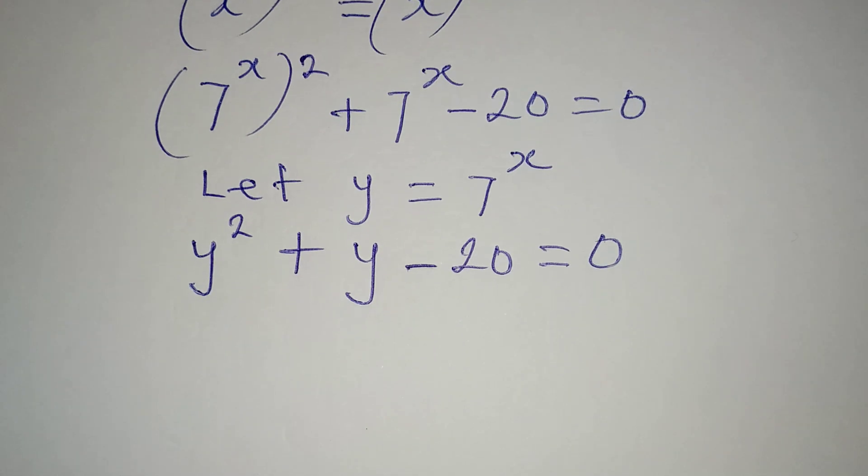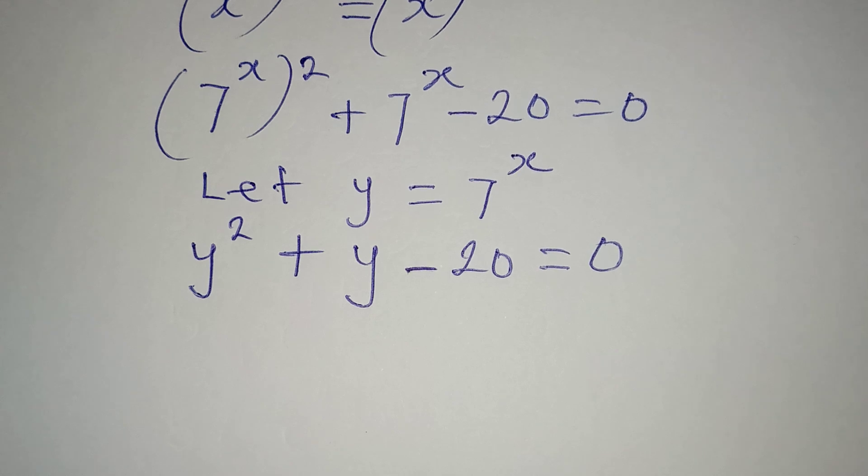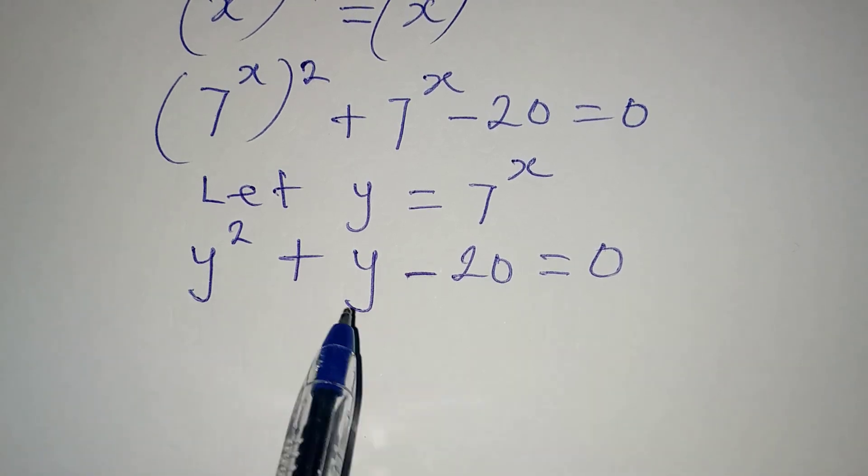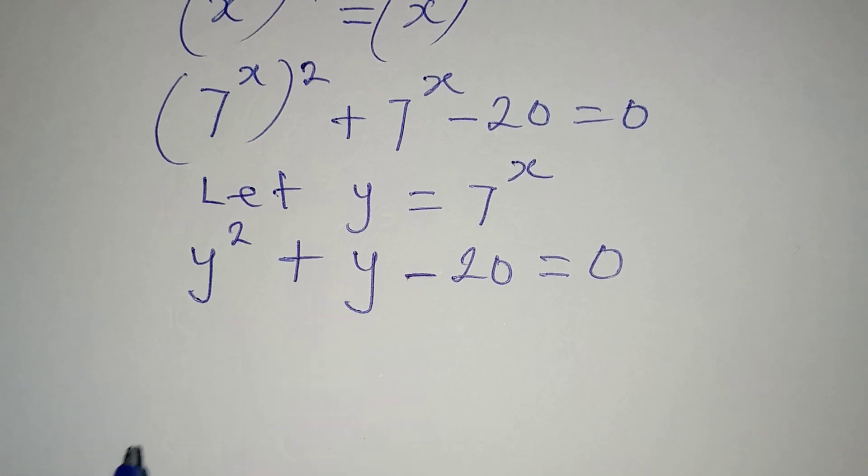Now this is a quadratic equation. If we're going to use factorization method it means that we should look for two numbers we will multiply to have minus 20, then we'll add the two numbers to have 1, which is the coefficient of y. The two numbers are going to be 5 and minus 4.